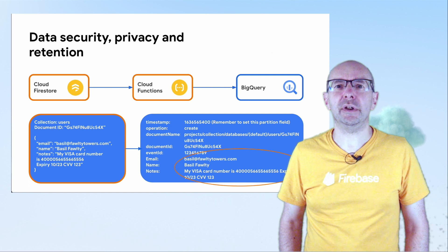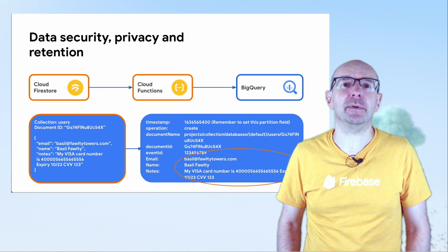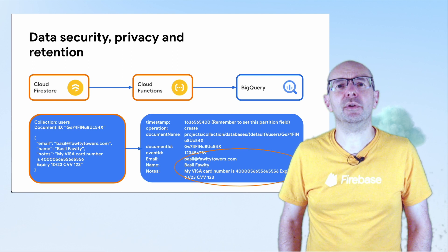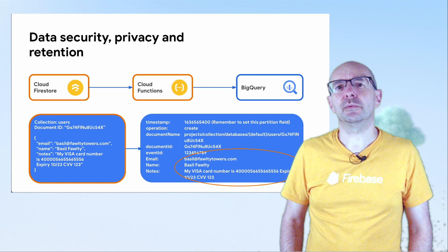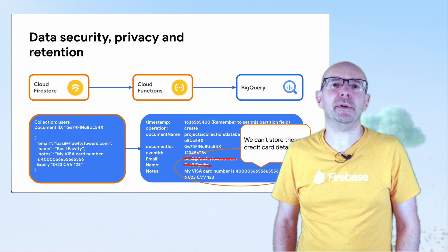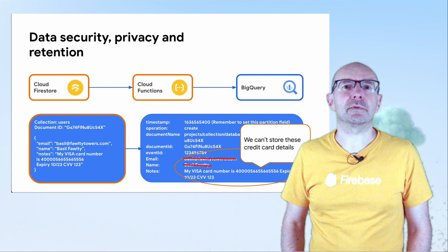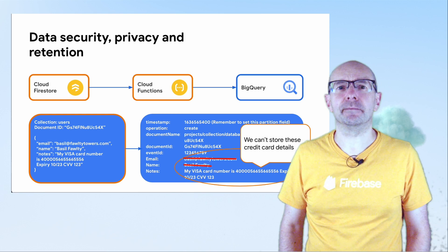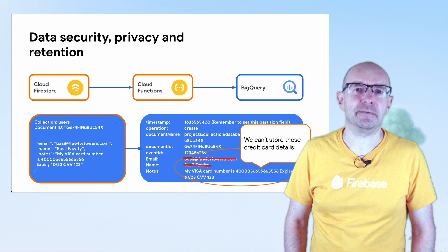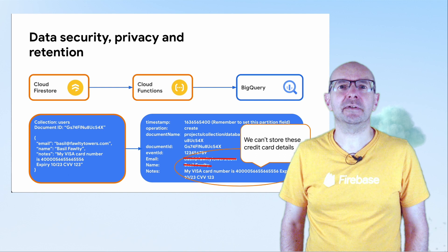Wait — we can't use this data as-is. These documents contain personally identifiable information and we could end up in a heap of trouble. We know the name field and the email field will both contain PII, so we can leave those out — but what about the notes field? We may want some of this information but have no way of knowing whether it contains sensitive information. Fortunately, the Data Loss Prevention API comes to the rescue.